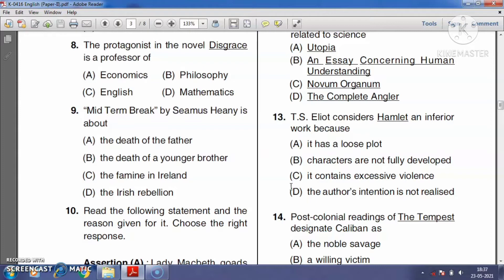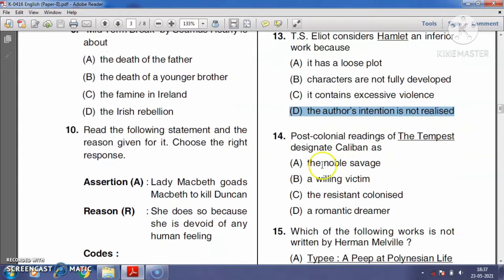Question number fourteen: Postcolonial readings of The Tempest designate Caliban as a noble savage, a willing victim, the resistant colonized, or a romantic dreamer? The postcolonial critics view that Prospero and Miranda's treatment of Caliban is an allegory of European colonialism. In the play, Caliban represents the colonized, so the right answer is option C, the resistant colonized.